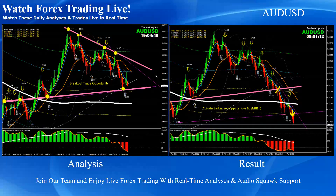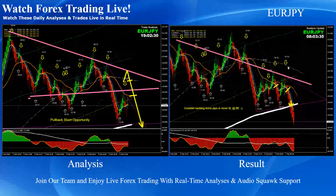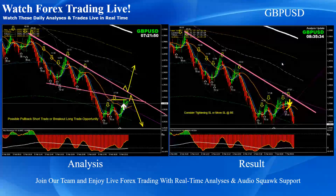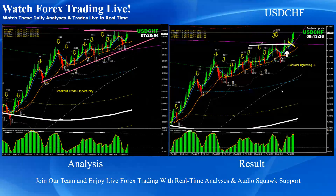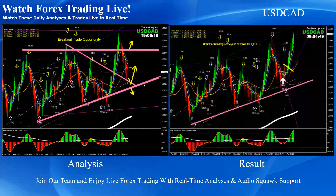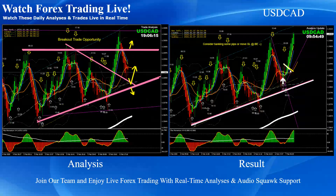Aussie dollar — beautiful triangle pattern breakout short trade. Euro yen — pretty straightforward; after we had this breakout yesterday, today we took a short trade on pullback. Pound dollar — pretty straightforward pullback short trade. Dollar Swiss franc — pretty straightforward based on the momentum, beautiful pullback long trade. Dollar CAD — as mentioned on the analysis, we had a beautiful pullback long trade and price nicely hit the resistance level.